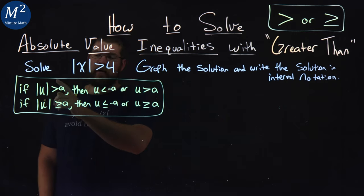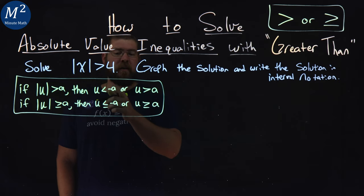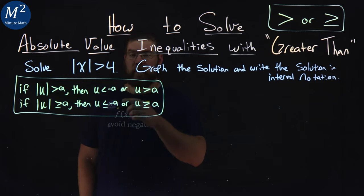If the absolute value of u is greater than a, then u is less than negative a, or u is greater than a.